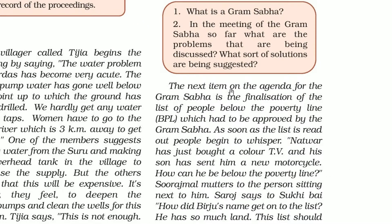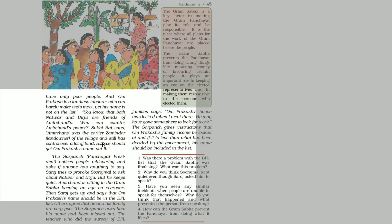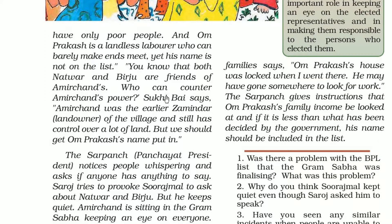The next item on the agenda is the finalization of the Below Poverty Line (BPL) list, which had to be approved by the Gram Sabha. As soon as the list is read out, people begin to whisper. Natwar has just bought a colour TV and his son sent him a motorcycle — how can he be BPL? Saroj asks why Birju, who has so much land, is on the list, while Om Prakash, a landless labourer who can barely make ends meet, is not on the list.